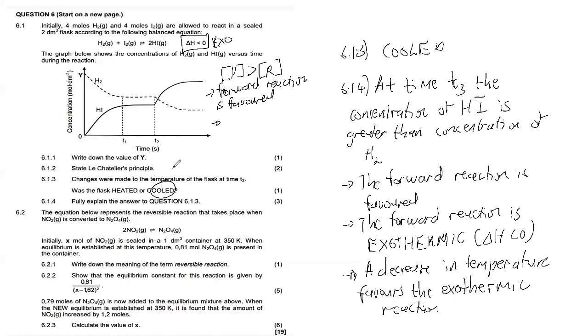Now the equation below represents the reversible reaction where NO₂ gas is converted to N₂O₄ gas. Initially x moles of NO₂ is sealed in a 1 dm³ container at 350 Kelvin. When equilibrium is established at this temperature, 0.81 moles of N₂O₄ gas is present in the container.